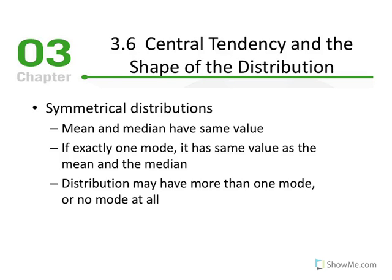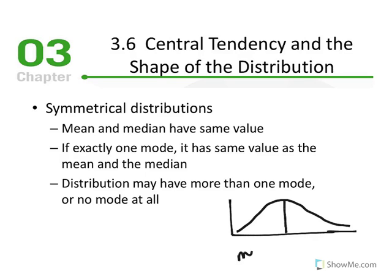We'll now move into the shape of the distribution — central tendency and the shape of the distribution. In symmetrical distributions, the mean and median have the same value. If there is exactly one mode, it has the same value as the mean and the median. The distribution may have more than one mode or no modes at all. In a symmetrical distribution, splitting it in half means the mean, median, and mode will all be in the center and equal one another.